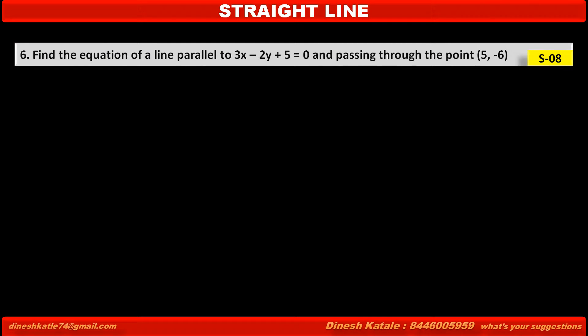Problem 6. Find the equation of a line parallel to 3x - 2y + 5 = 0 and passing through the point (5, -6).